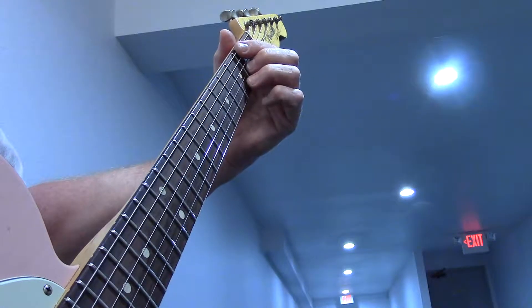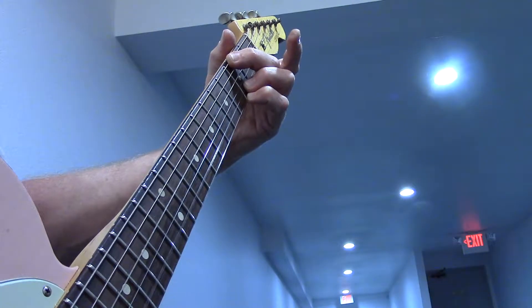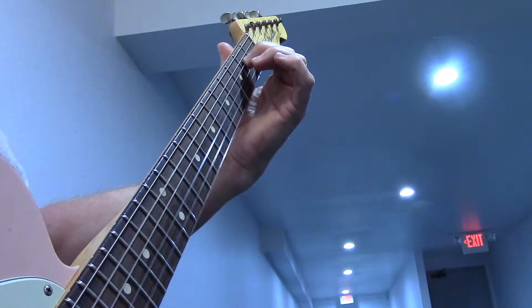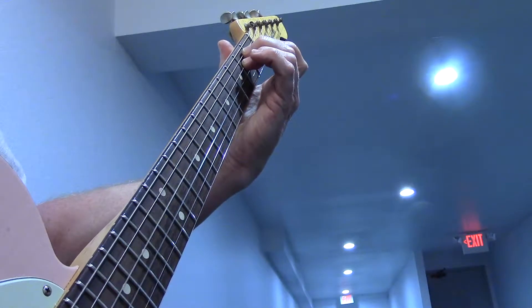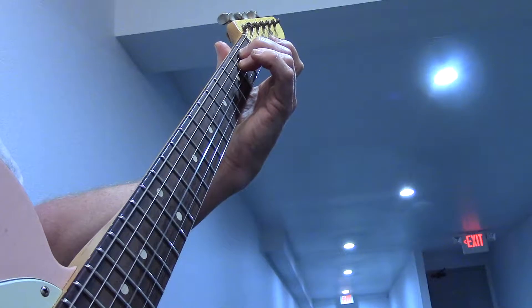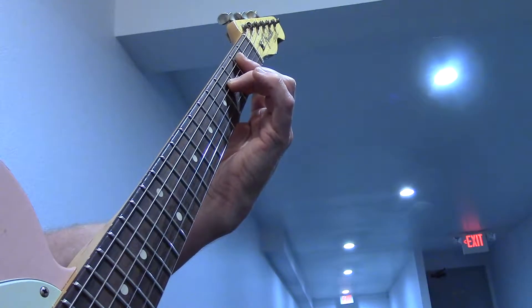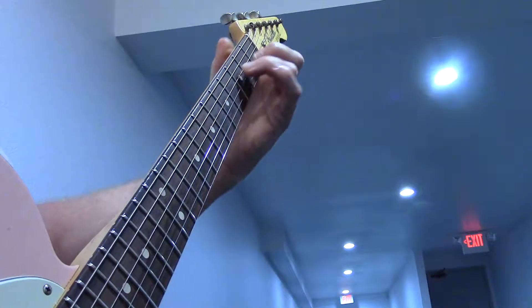Starting with D over F sharp, then A minor 7, back to E minor, B minor 7 second position, B flat minor 7, and back to A minor 7.